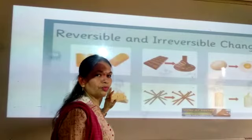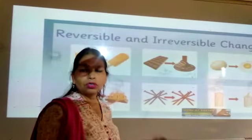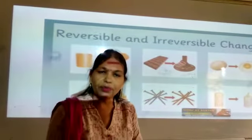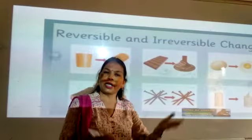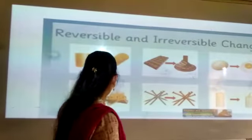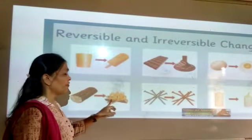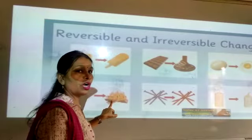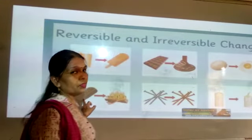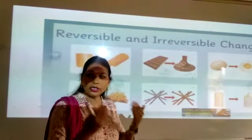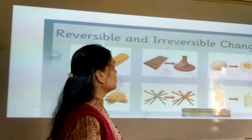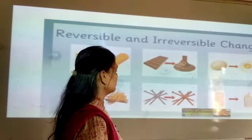When wood is cut down and articles are made from it — like furniture, tables, chairs, benches, doors — all these things are made from cutting down trees. When we want the trunk of the tree back again, it cannot be obtained. All these are irreversible changes.